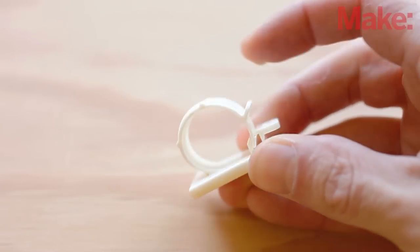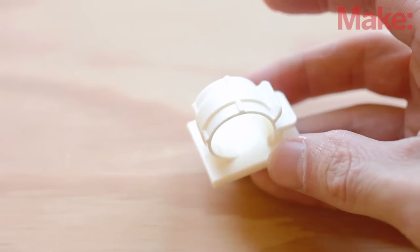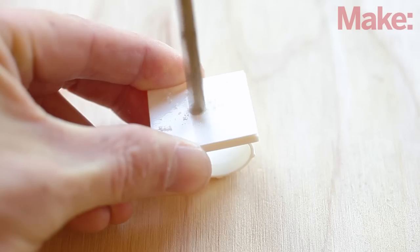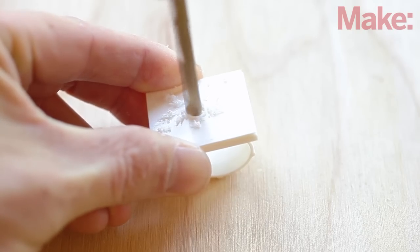The cable clip is used as a finger cuff to hold the pulse sensor against your skin. Drill two holes in it for the emitter and detector to poke through.